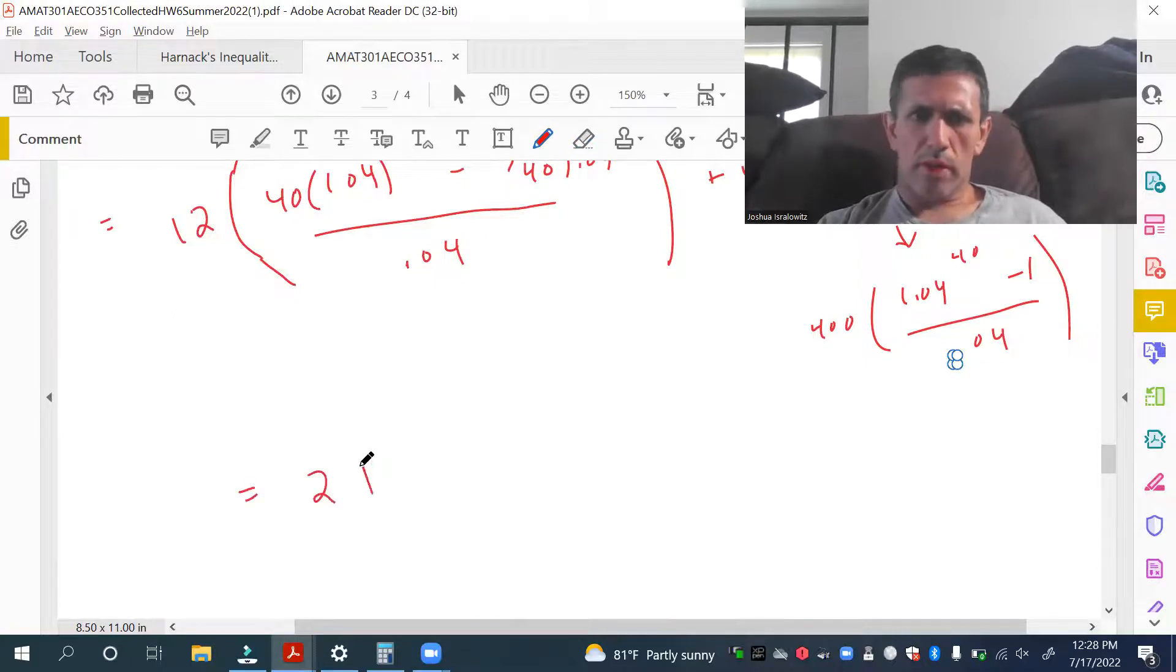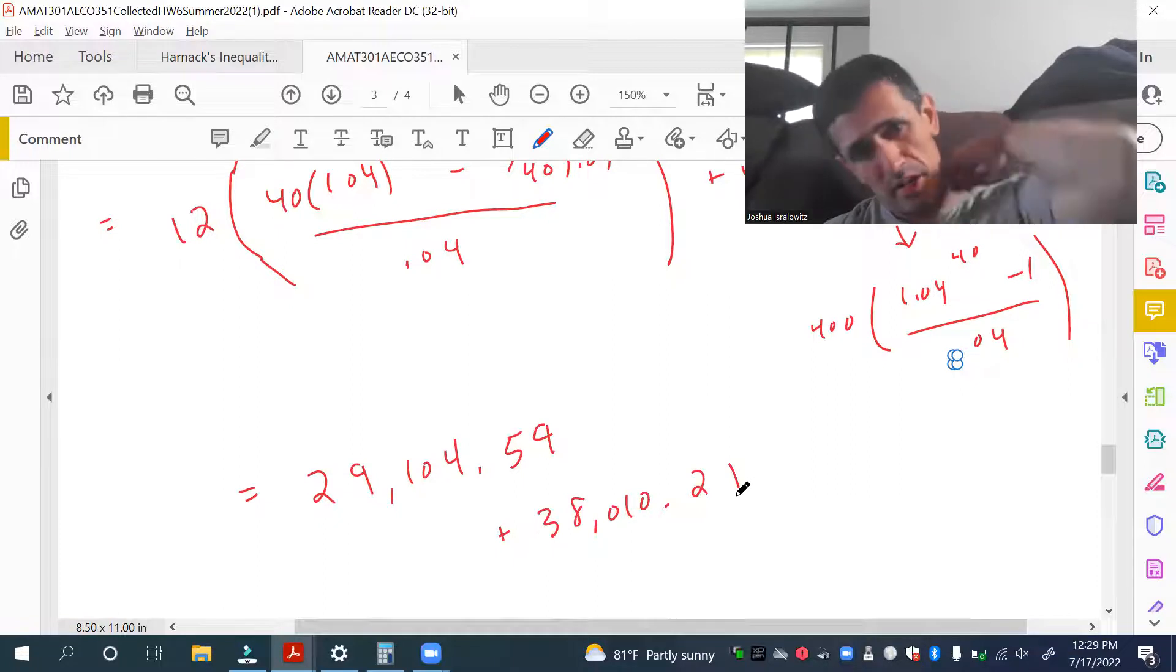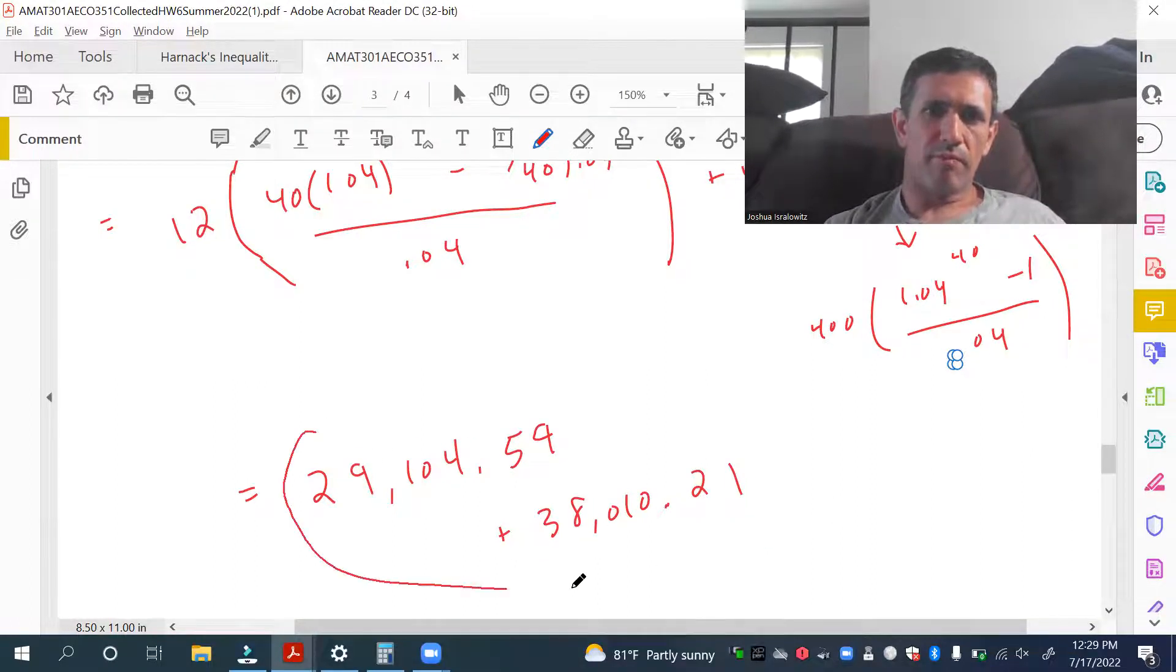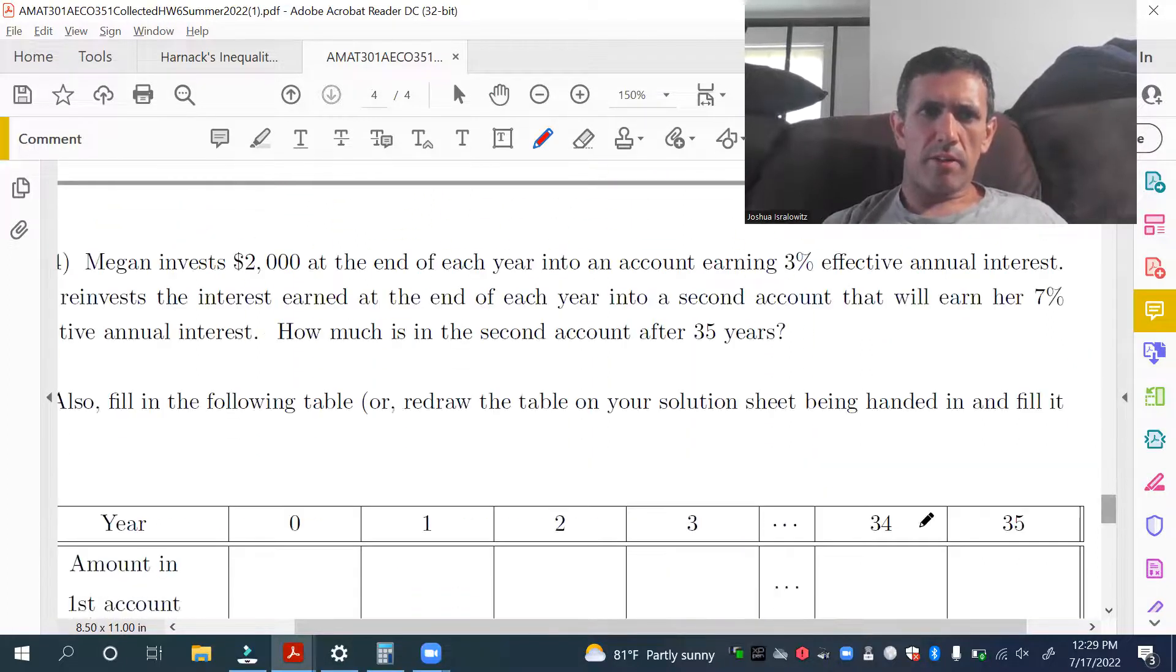All right, so you get 29,104.59, plus 38,010.21. And I don't have it written here, but, yeah, these are your two answers, so you just add these two up, and you get your accumulated value. All right, last but not least, similar kind of problem.